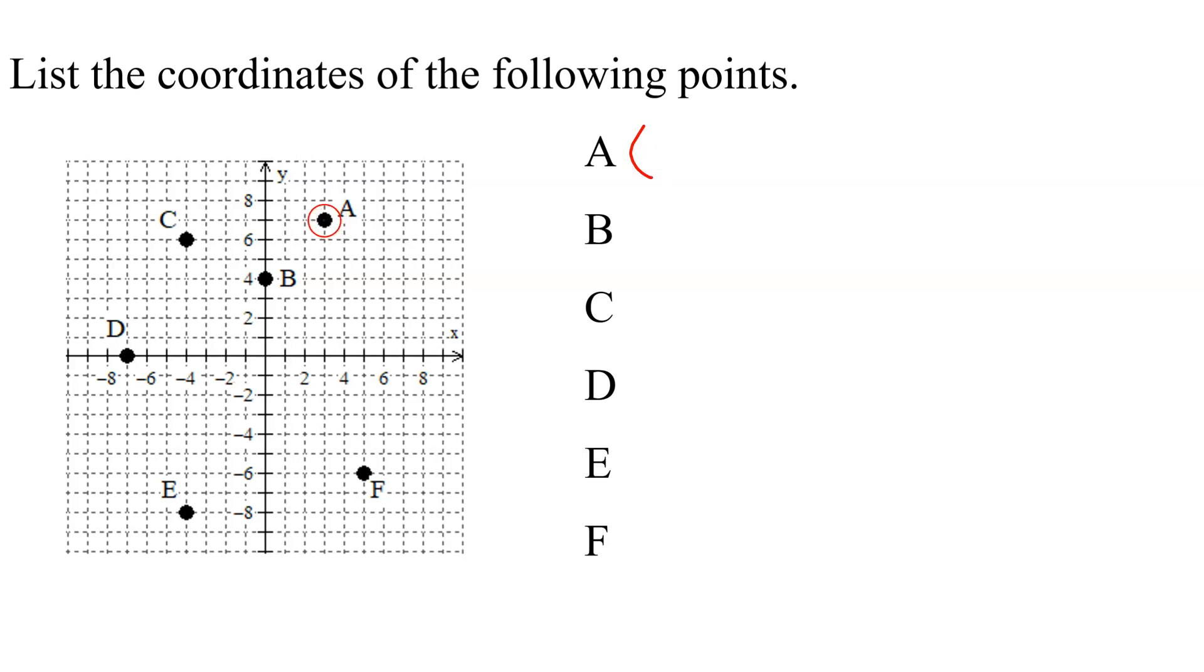So if I look at point A, going down to the x-axis, what's its x value? 3. Going across to the y-axis, what's the y value? 7. So A has the coordinates 3, 7.